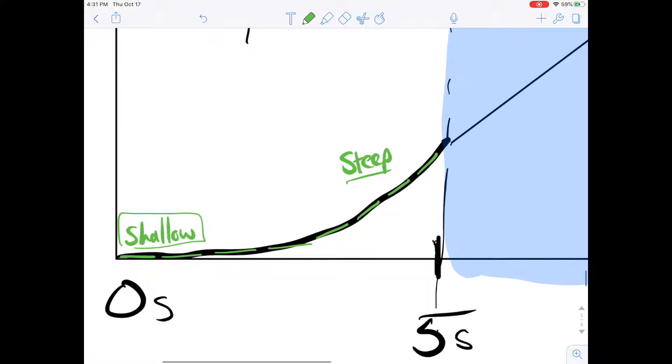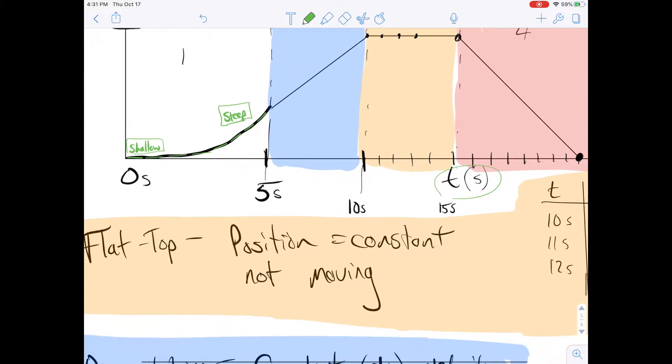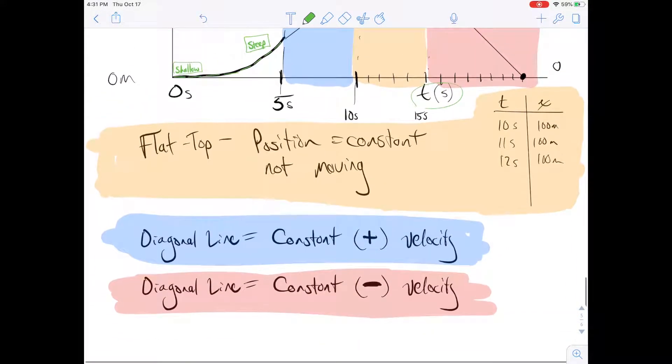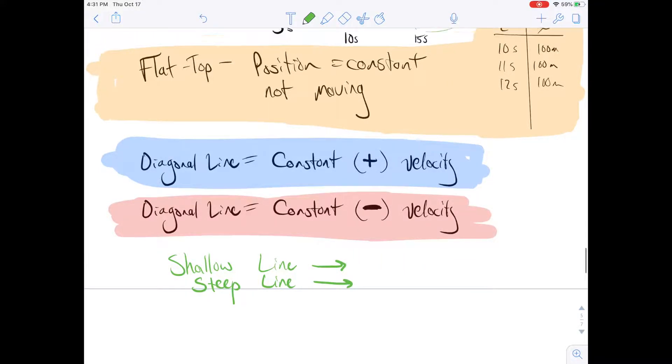And we remember from class, or maybe we don't, that a shallow line on a position versus time graph can either correspond to slow or fast, do you remember? So shallow line corresponds to slow or fast, whereas steep line corresponds to, do you remember?